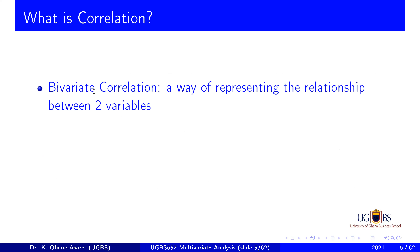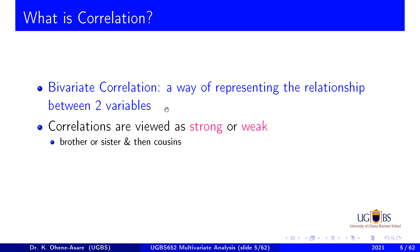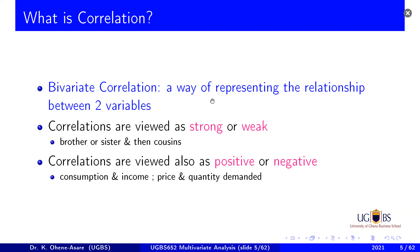Let's start with correlation. What is correlation? Bivariate correlation deals with the connection between two variables. Correlation can be strong or weak. For example, what is the correlation between a brother and a sister — is it strong or weak? It's strong. What about between two cousins compared to a brother and sister? A cousin is weak. So that tells you about the strength of the correlation.